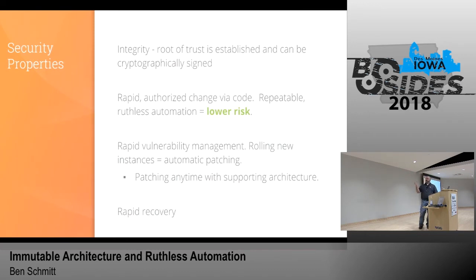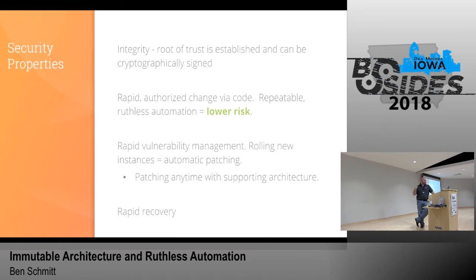More properties that enable it. Integrity: root of trust can be established cryptographically — signed. On Amazon, you can cryptographically sign and attest to things because they have a PKI available to you. Rapid authorized change via code is repeatable — that's ruthless automation — and it's lower risk because you can move faster, know what you did, and can roll back. You can also do rapid vulnerability management: when rolling new instances in a cloud environment, those instances should come up fully patched. You can patch any time with stateless supporting architecture behind a load balancer, keeping your environment evergreen. And rapid recovery — containers and infrastructure give you the ability to rapidly recover from an event without having to rack, stack, power, configure, and maintain a server.